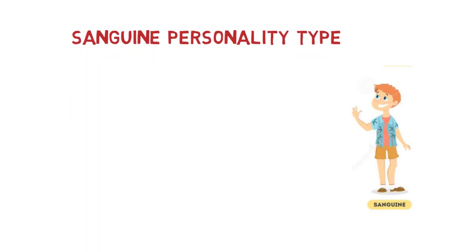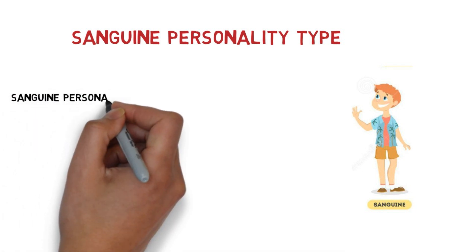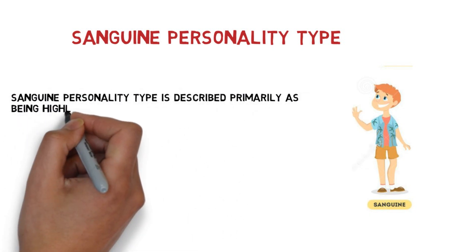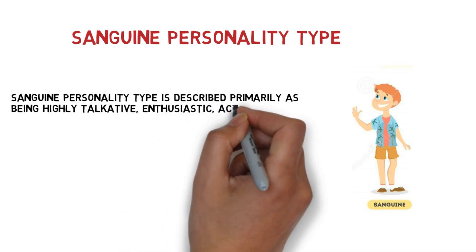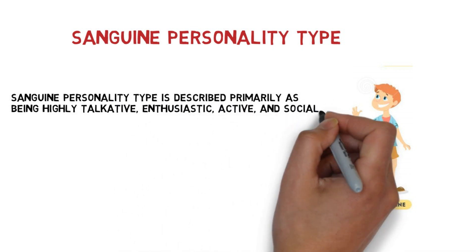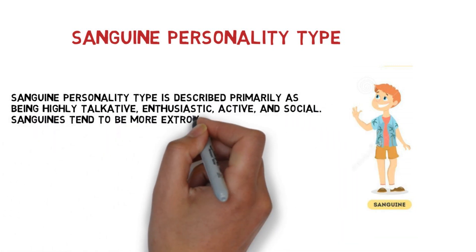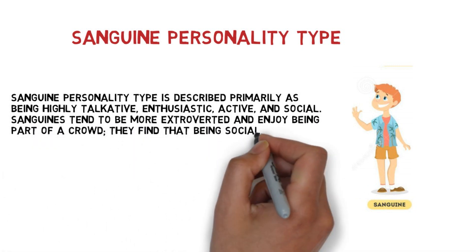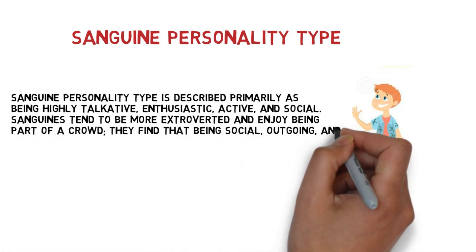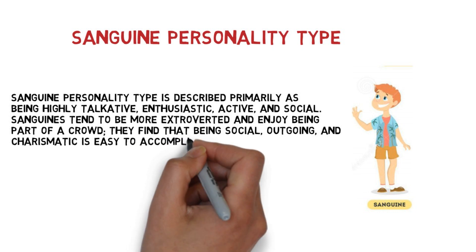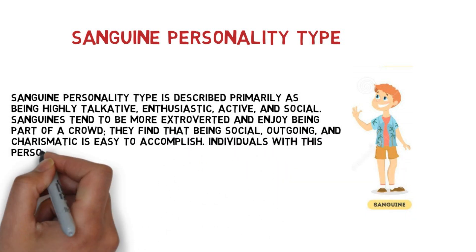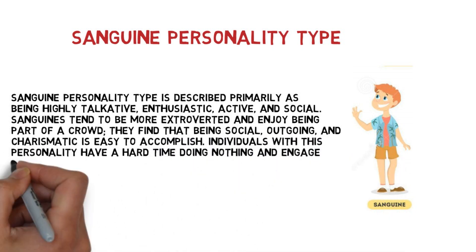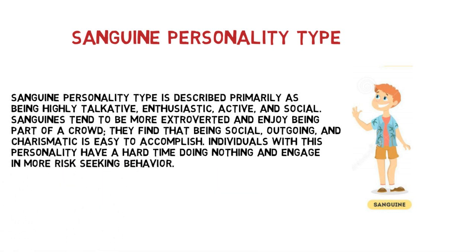The first one: sanguine personality type. Sanguine personality type is described primarily as being highly talkative, enthusiastic, active, and social. Sanguines tend to be more extroverted and enjoy being part of a crowd. They find that being social, outgoing, and charismatic is easy to accomplish. Individuals with this personality have a hard time doing nothing and engage in more risk-seeking behavior.